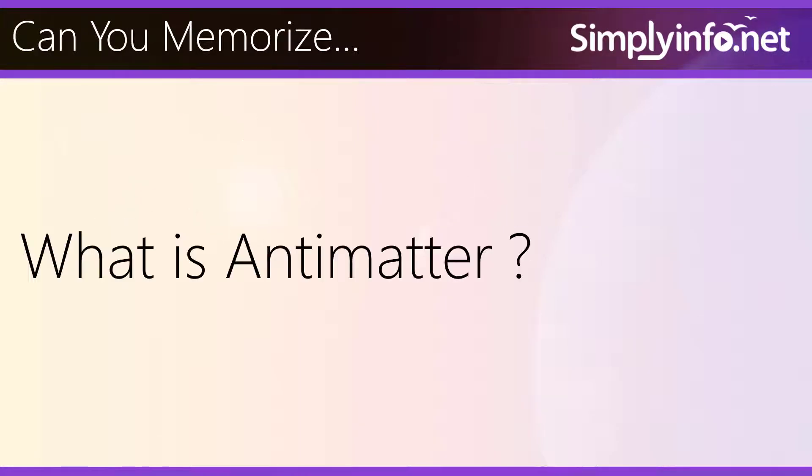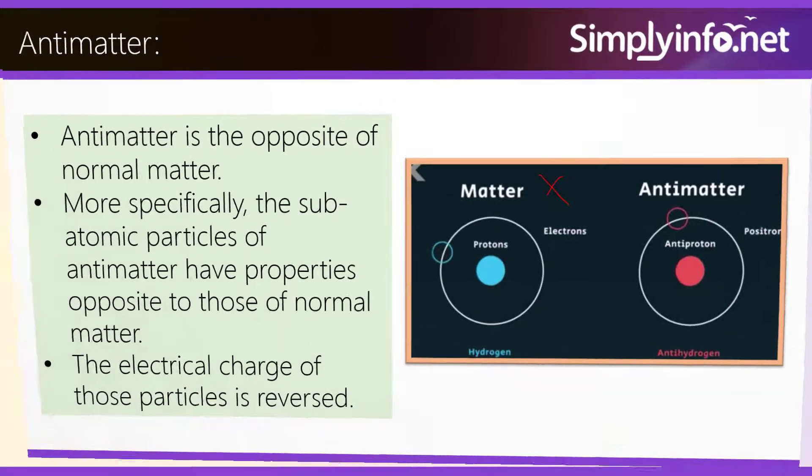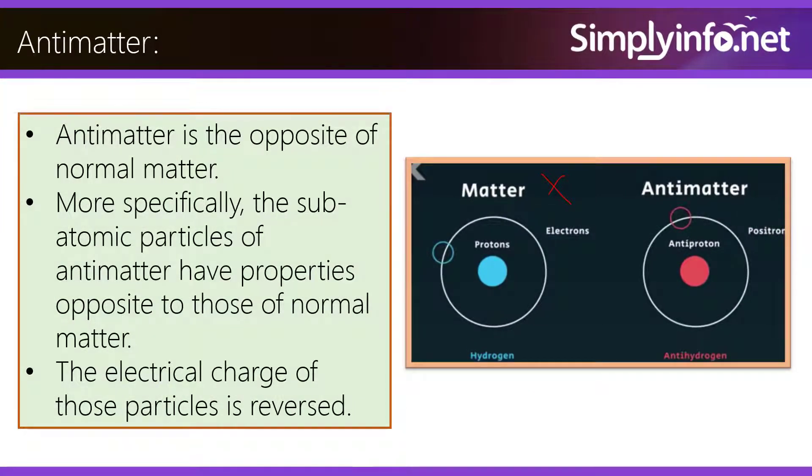Can you memorize what is antimatter? Antimatter is the opposite of normal matter. More specifically, the subatomic particles of antimatter have properties opposite to those of normal matter. The electrical charge of those particles is reversed.